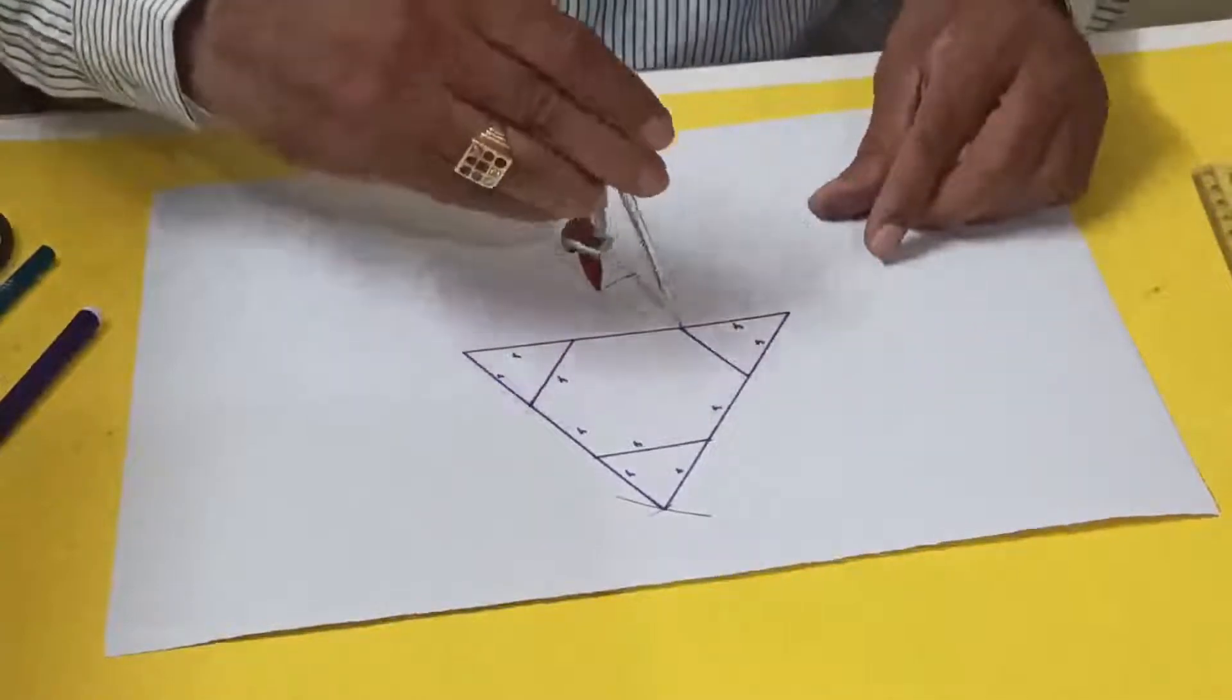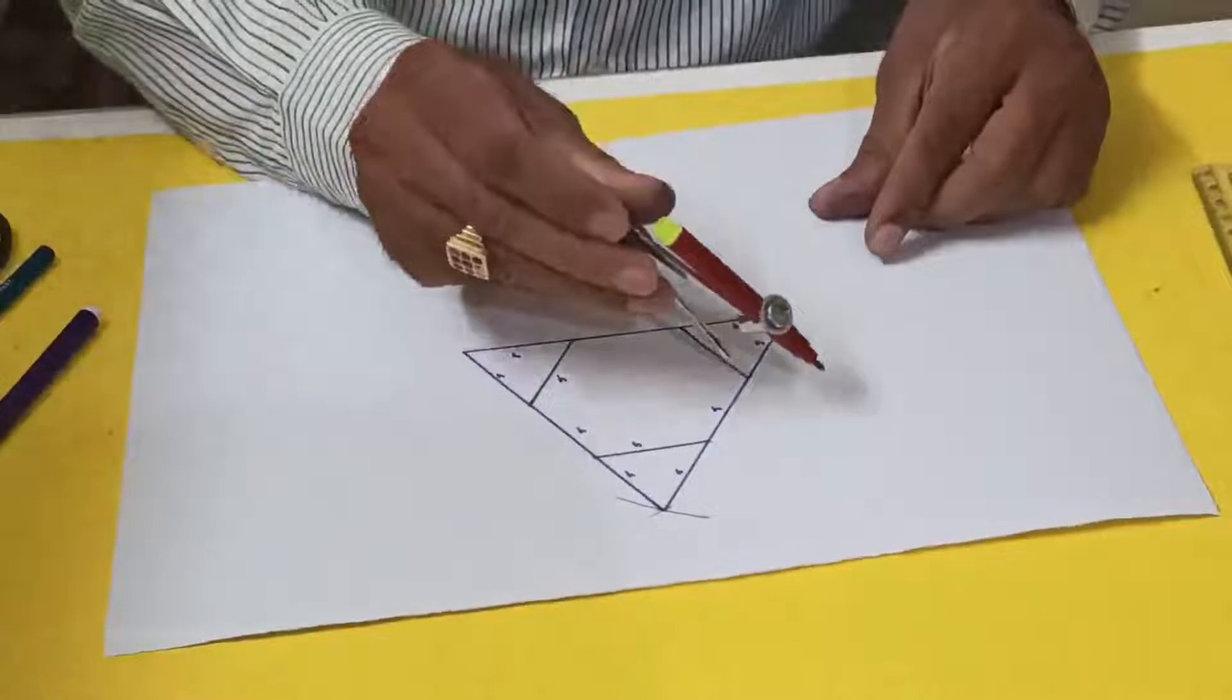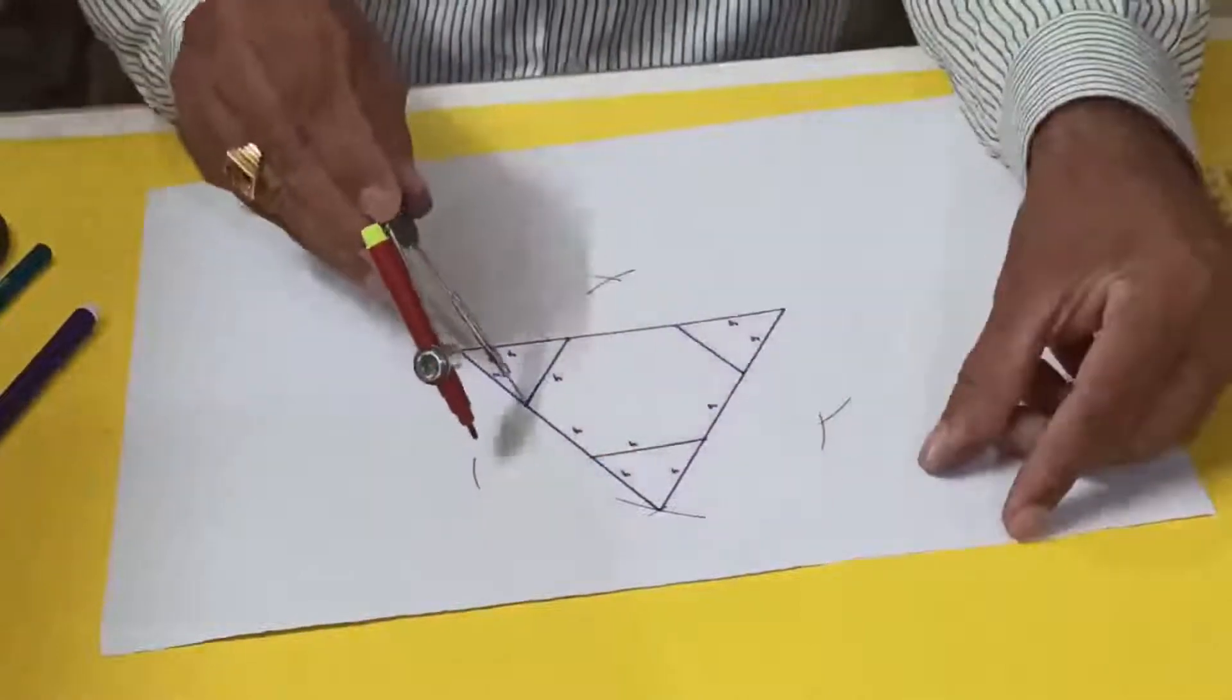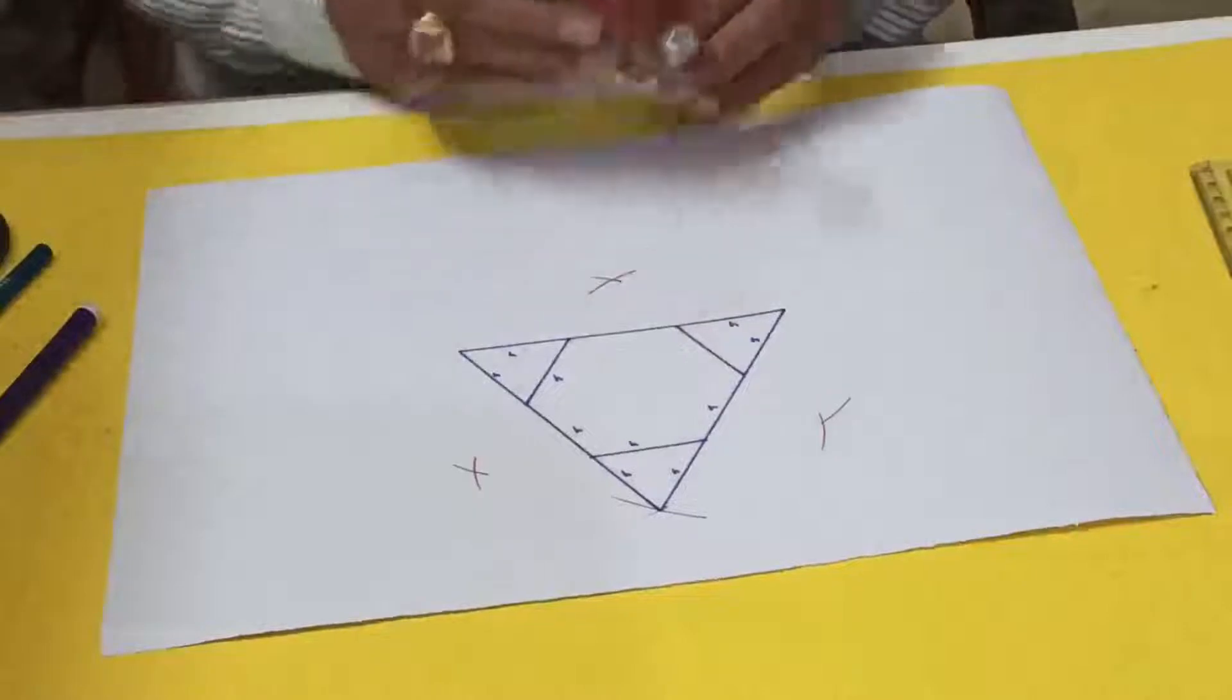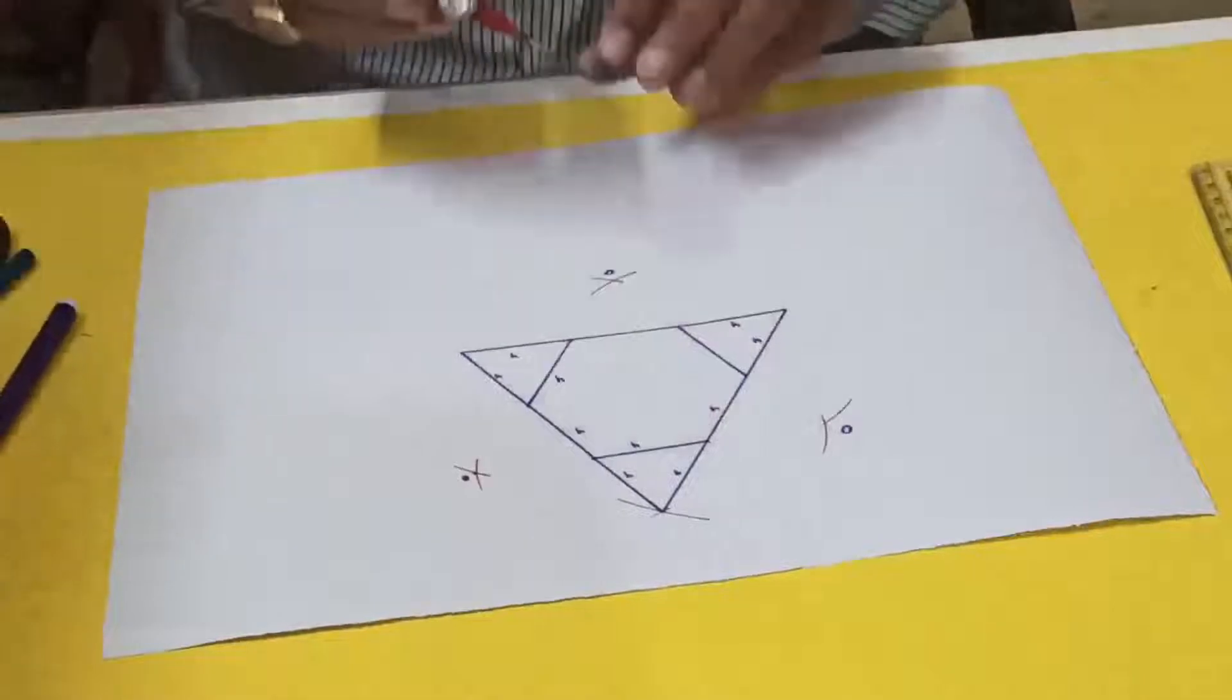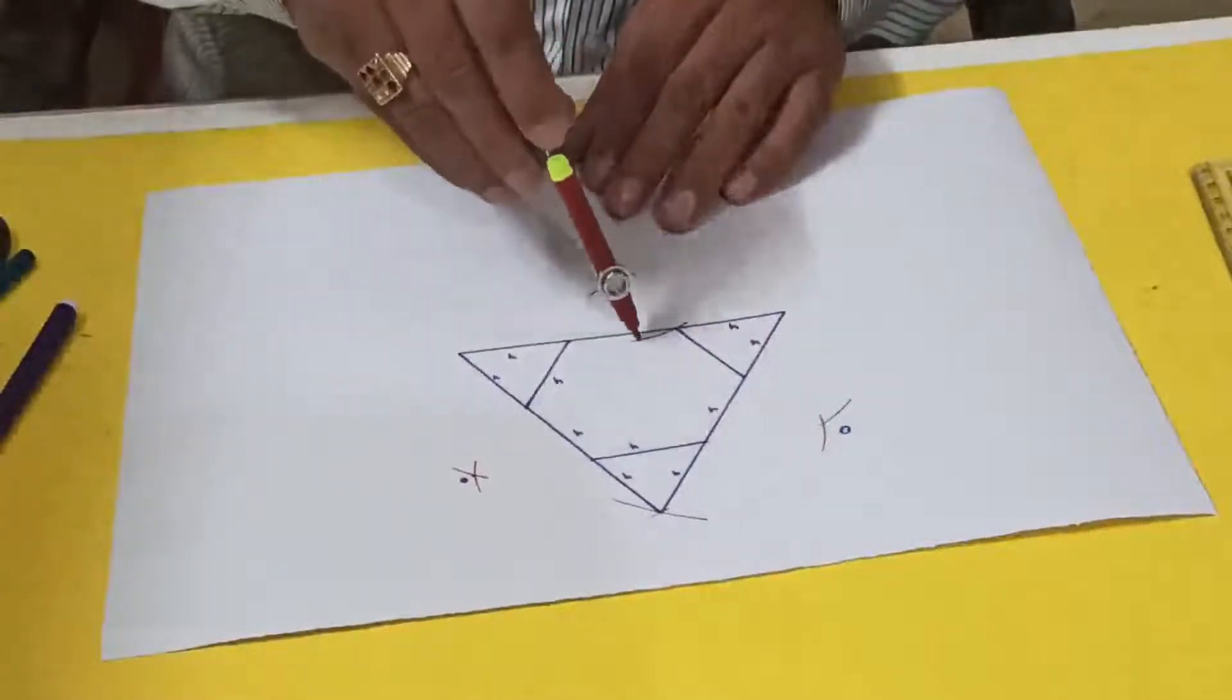I'll cut it here. Now from this point, from point O, from this point I'll draw a circle.